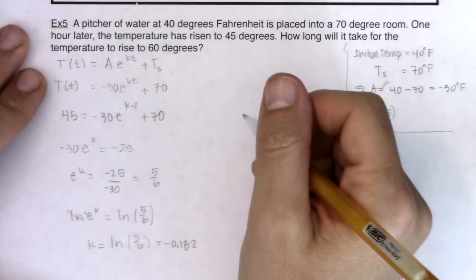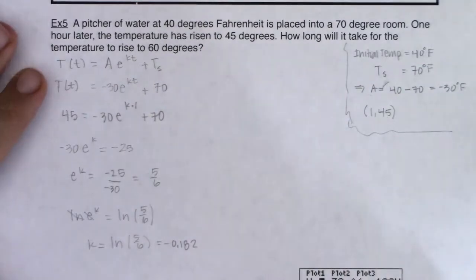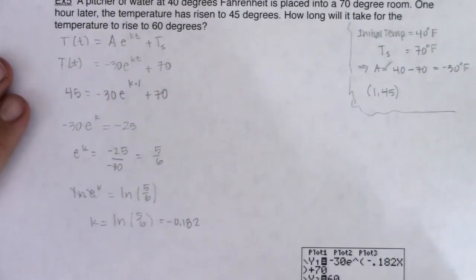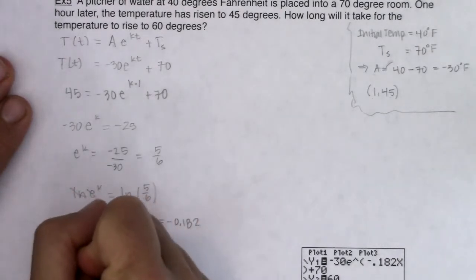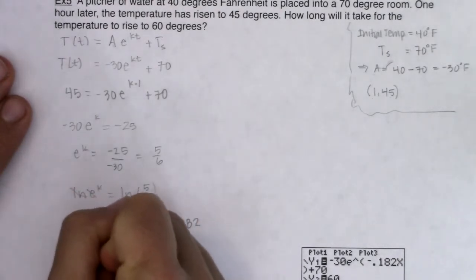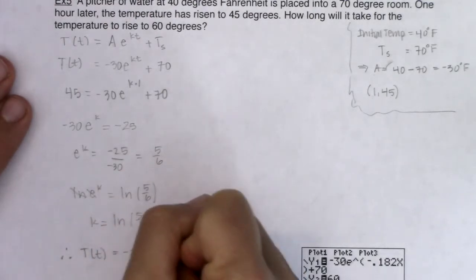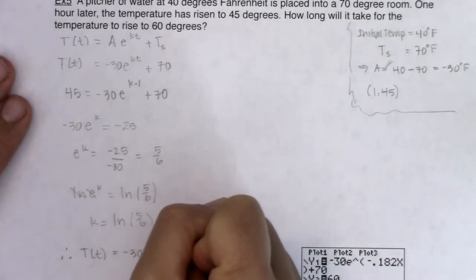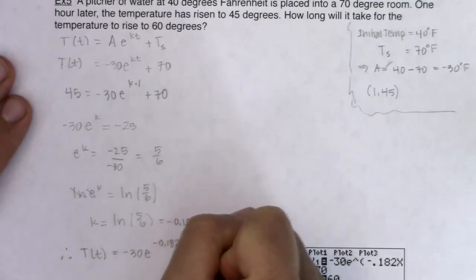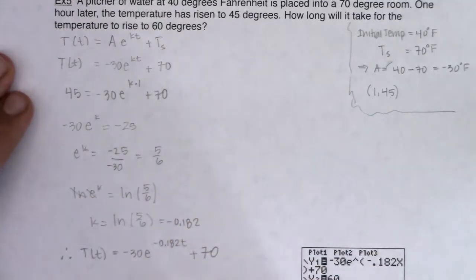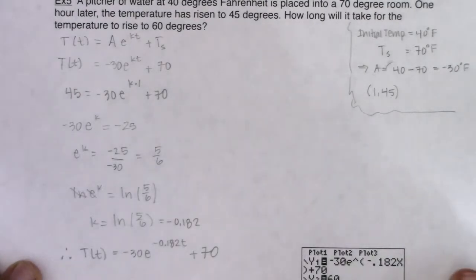So with all of that, at this point, what I know, I'm going to scooch this up even more just so we can write our final model here. So what this is telling me is that my Newton's law of cooling equation is officially negative 30e to the negative 0.182t plus 70. That is it in all of its glory. There's the equation that is governing me through this, this water pitcher problem.